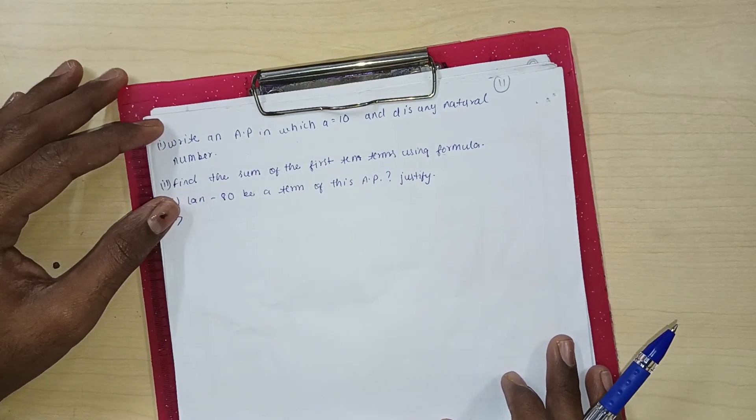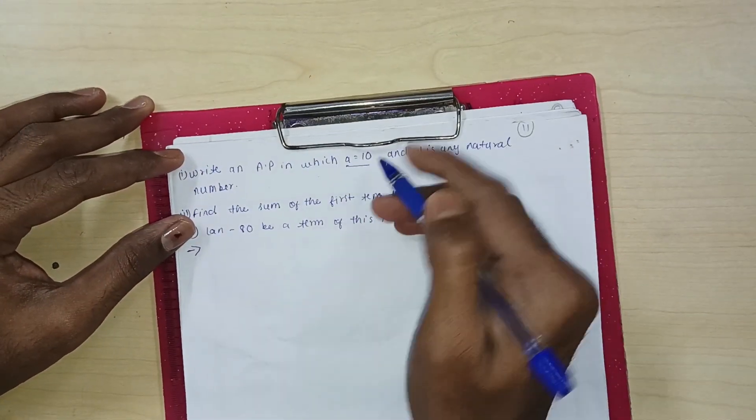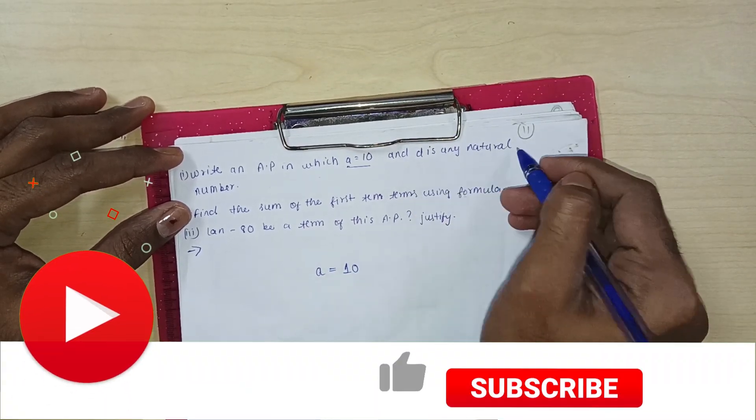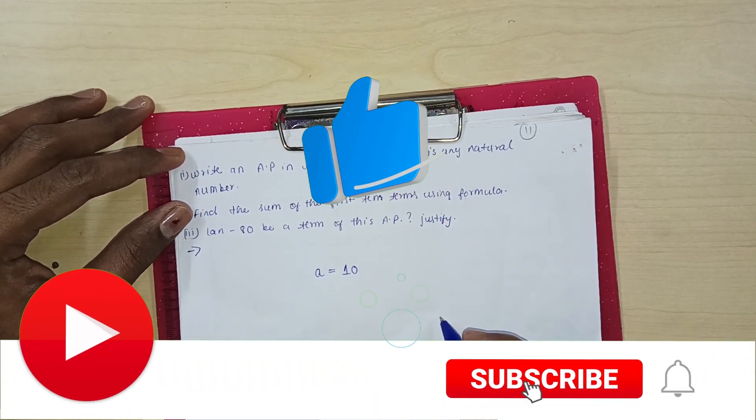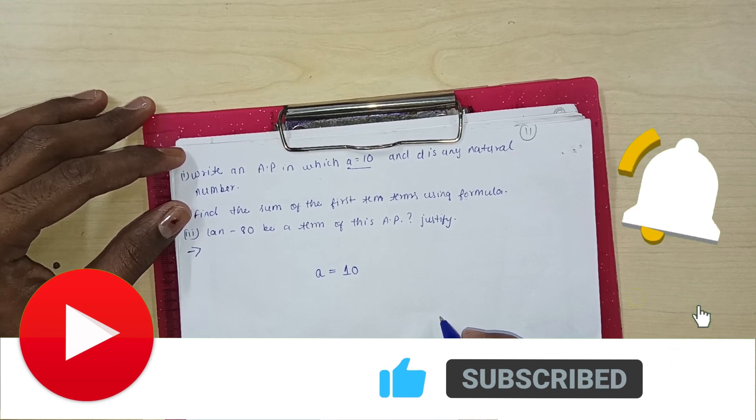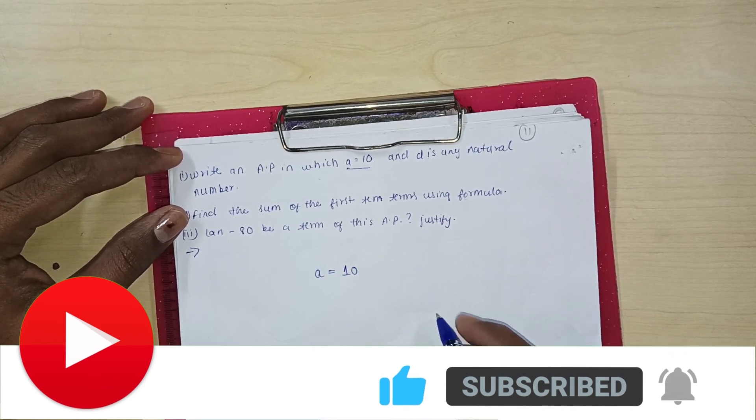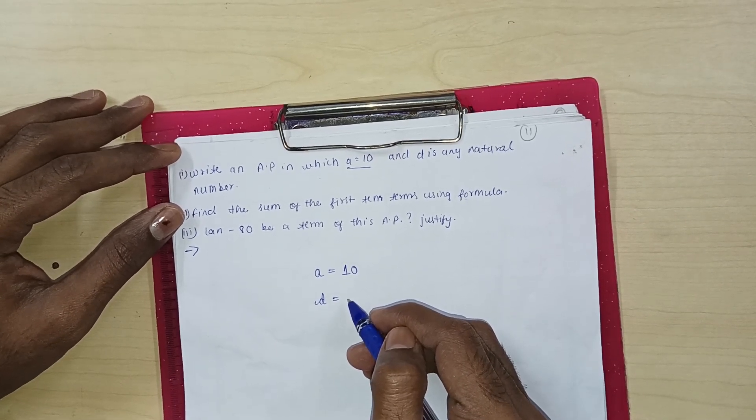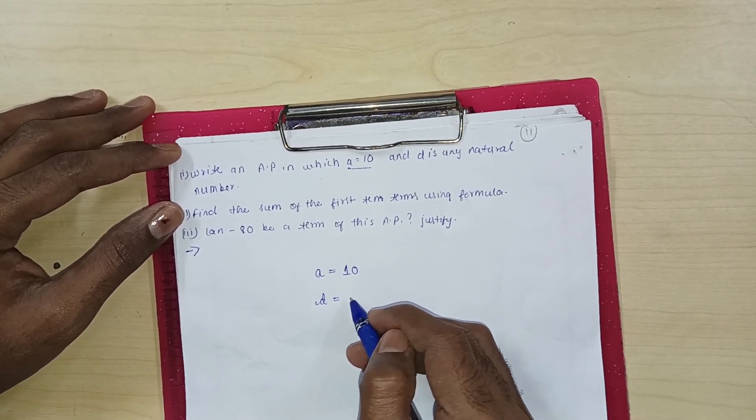Now this is a new question. Write an AP in which A is equal to 10. And D is a natural number. Tell me one of the natural numbers. Natural number starts from where? It starts from 1. Exactly.